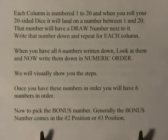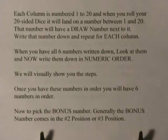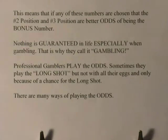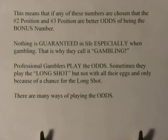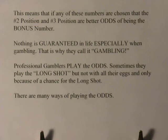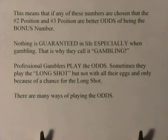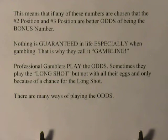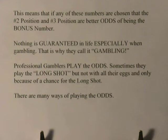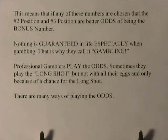Once you have these six numbers in order, the bonus ball will not necessarily be in that ordering. Nothing is guaranteed in life, especially when gambling — that is why we call it gambling. Professional gamblers play the odds, meaning they favor the more likely numbers and don't put everything on long shots. They may include one long shot alongside other numbers, but they don't put all their money on long shots, only a little bit, since a long shot does come in once in a while. There are many ways of playing the odds.